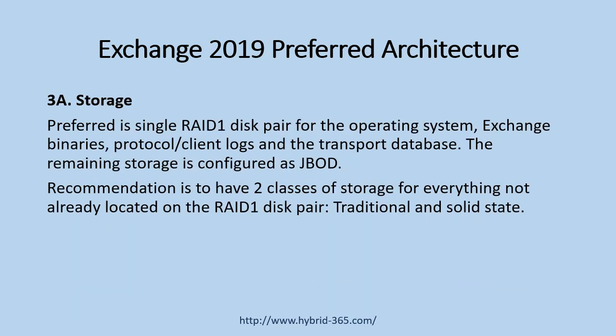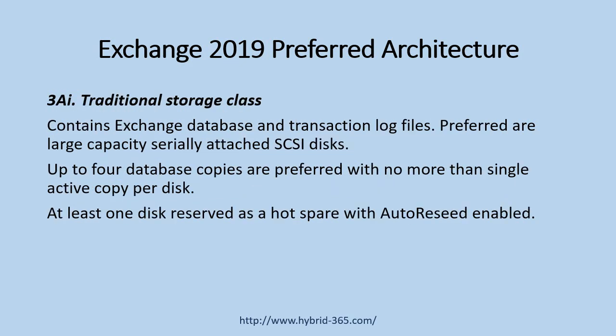For storage design, what is preferred is a single RAID 1 disk pair for the operating system, Exchange binaries, protocol and client logs, and the transport database. The remaining storage is configured as JABOD. The recommendation is to have two classes of storage for everything not already located on the RAID 1 disk pair: traditional storage class and solid state storage class. Traditional storage class contains Exchange database and transaction log files, and large capacity serially attached SCSI disks are preferred for this class.